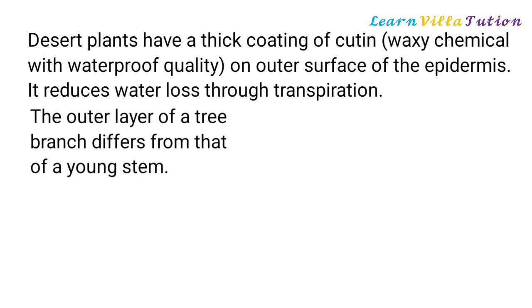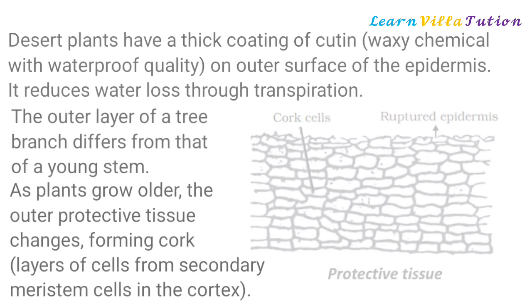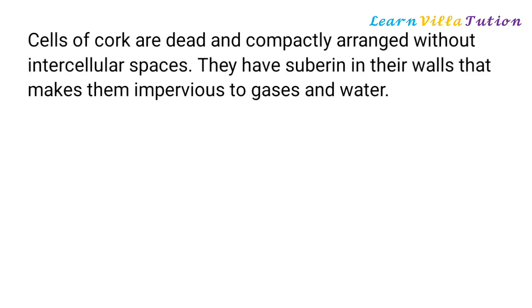The outer layer of a tree branch differs from that of a young stem. As plants grow older, the outer protective tissue changes, forming cork — layers of cells from secondary meristem cells in the cortex. Cells of cork are dead and compactly arranged without intercellular spaces. They have suberin in their walls, which makes them impervious to gases and water.